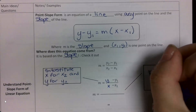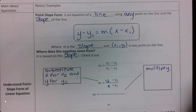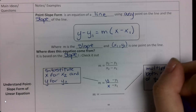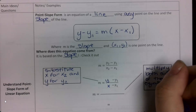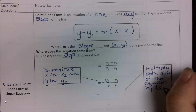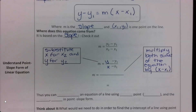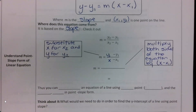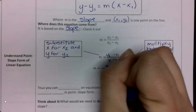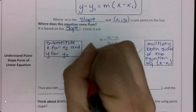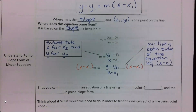Then I want to multiply both sides of my equation by the stuff on the denominator. This is going to get x minus x sub 1 out of the denominator, so these will cancel out.